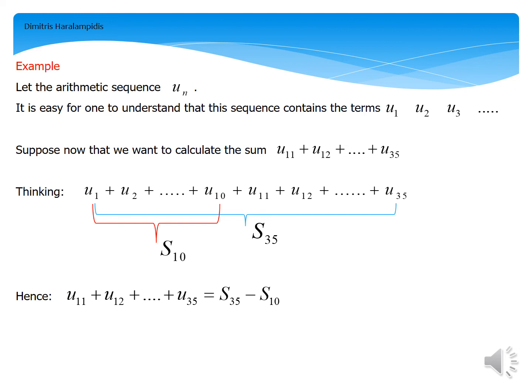So if we want to actually get the sum of u_11 to u_35, we only have to find the difference between S_35 and S_10. We'll just have to calculate S_10, calculate S_35, and then subtract S_10 from S_35.